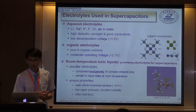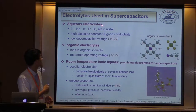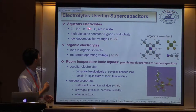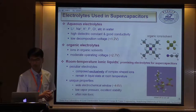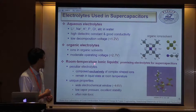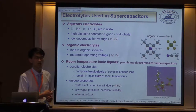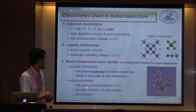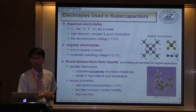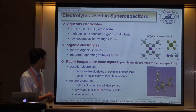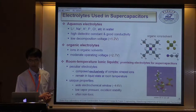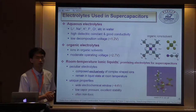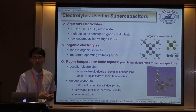Generally speaking, there are three types of electrolytes used in supercapacitors: aqueous electrolytes, organic electrolytes, and recently room-temperature ionic liquids, which have become promising electrolytes due to their quite wide electrochemical window and other unique features such as excellent stability and non-volatility. In particular, their wide electrochemical window can help improve the energy density of supercapacitors.